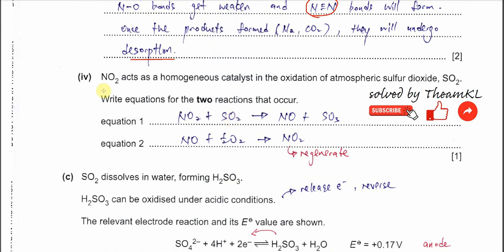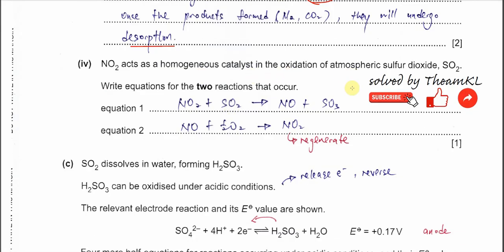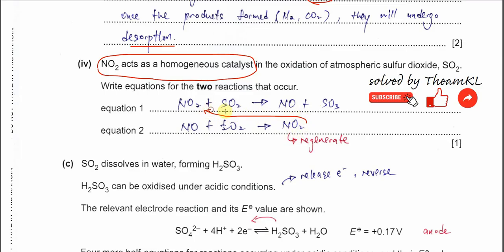Part B4: NO₂ acts as a homogeneous catalyst in the oxidation of atmospheric SO₂. Write equations for the two reactions that occur. You must start with NO₂ reacting with SO₂, and you must show that NO₂ is regenerated to prove it is a homogeneous catalyst. First, NO₂ oxidises SO₂ and is itself reduced to NO, while SO₂ is oxidised to SO₃. Then NO is oxidised by oxygen to regenerate NO₂, which can catalyse the reaction again.